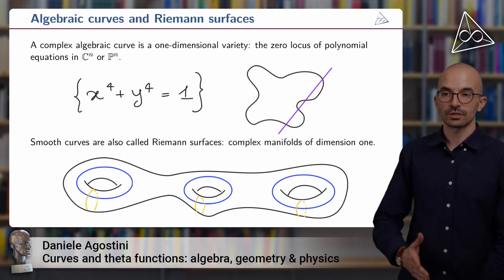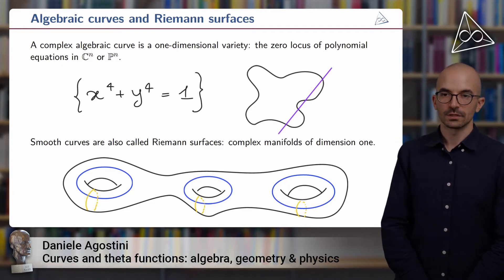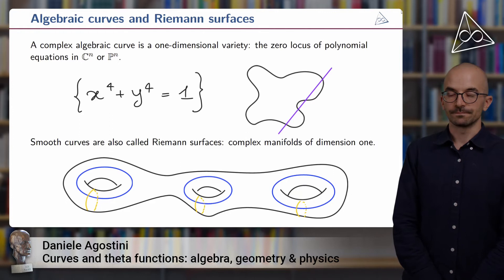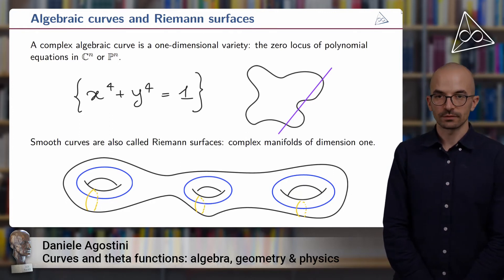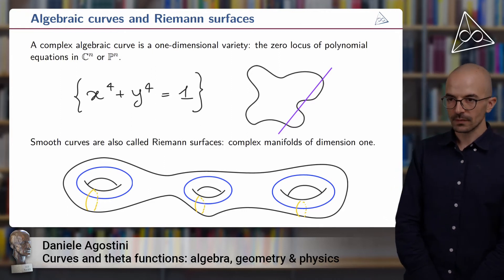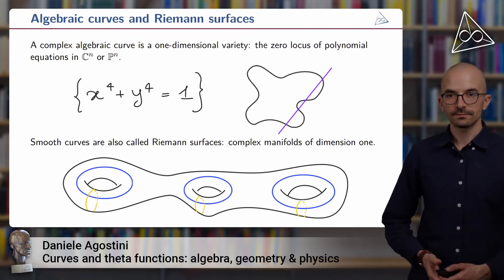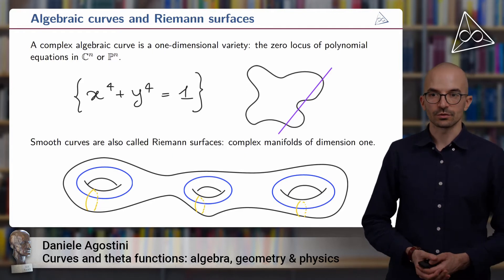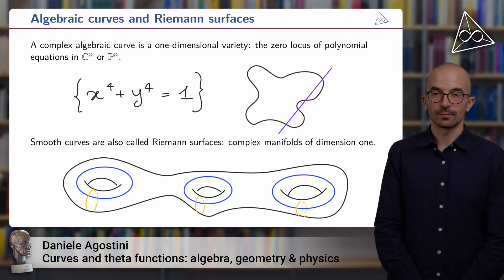And on the other side, you see the geometric picture. The real points of this curve look like a plane curve of degree 4. The degree 4 can be seen from the fact that a line, a general one, intersects it in four distinct points. What's important about curves is that they have dimension 1, so complex dimension 1.